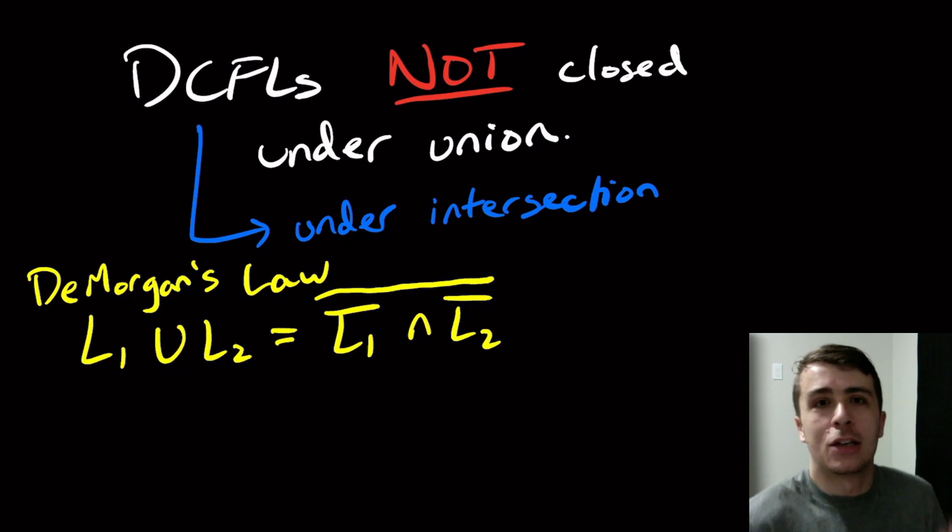So it's actually one of the main classes of languages that is not closed under anything of the operations we care about other than complement, which is kind of surprising. It's either union or intersection or both, but here is neither one of the two.